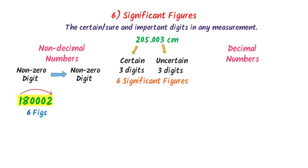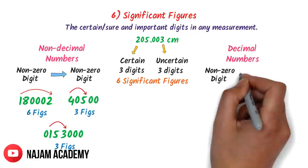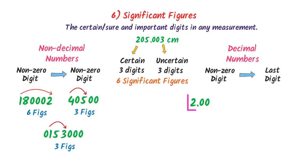For another non-decimal number where the first non-zero digit is 1 and the last is 3, there are 3 significant figures. For decimal numbers, go from the first non-zero digit to the last digit. For example, if the first non-zero digit is 2 and the last digit is 0, there are 3 digits — so 3 significant figures. In another decimal number starting at 1, going to the last gives 4 significant figures.